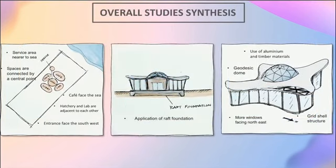The next slide shows the application of the synthesis from the site, precedent studies, and case studies for the potential design of the rehabilitation center. The first image shows the space planning according to the previous studies. The next image shows the application of raft foundation. The third image shows the idea of form based on the previous study synthesis.